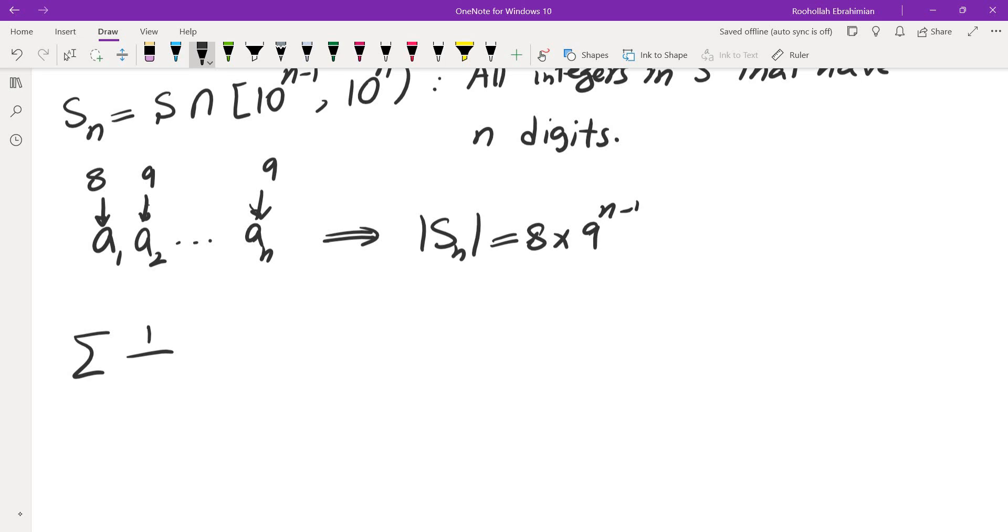So if you look at the sum of 1 over X when X is in S_N, this is going to be less than or equal to 8 times 9 to the power of N minus 1, that's how many elements we have in this set, times the largest element in that set, which is 1 over 10 to the power of N minus 1, because that's the first integer with N digits. And this is 8 times 9 times 9 to the power of N minus 2 over 10 to the power of N minus 1.